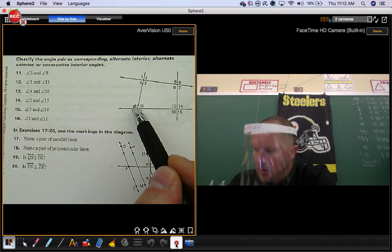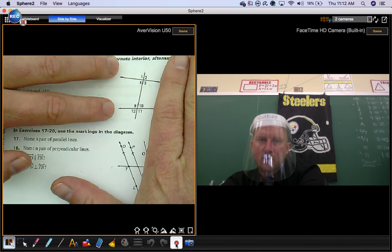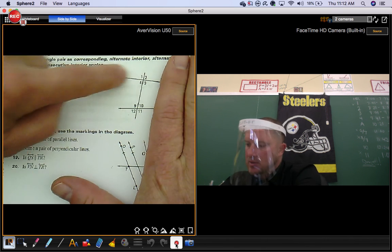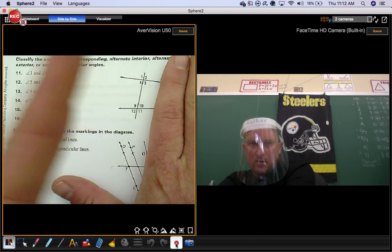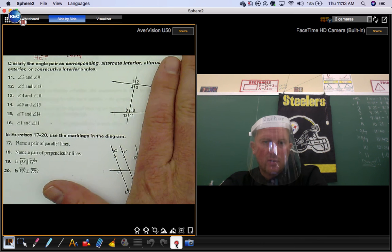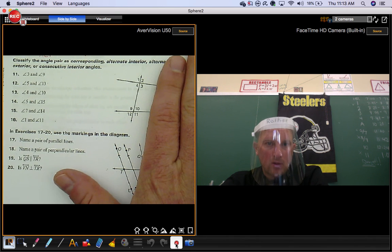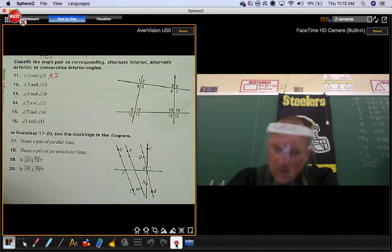Angle 3 and angle 9. They're in between these two lines and they're on different sides of this transversal. Notice how angle 3 is on the right and angle 9 is on the left. If you use your hand or your finger or your pencil to cover up a line, it helps. These angles are alternate interior. I'll use that abbreviation.